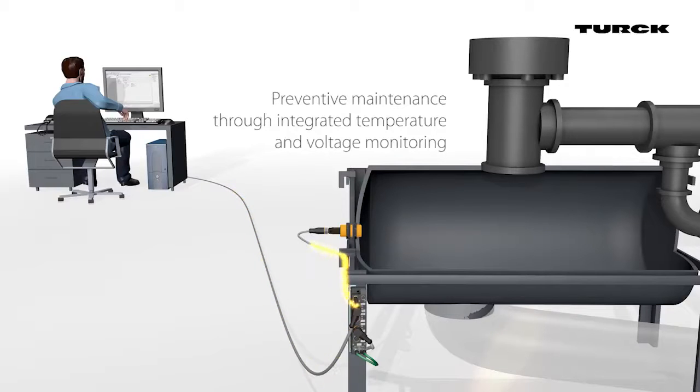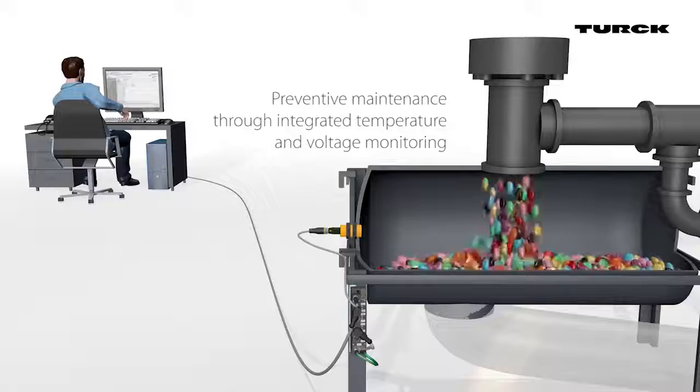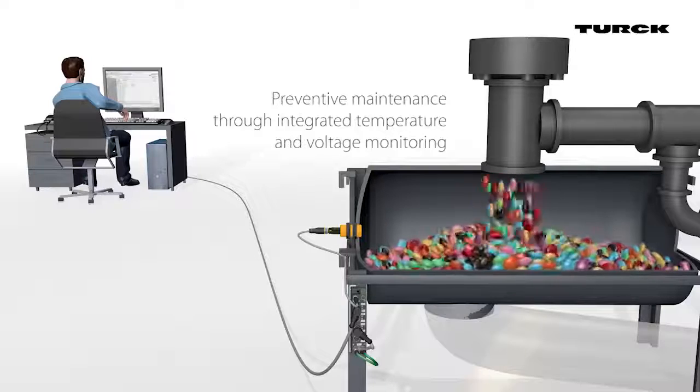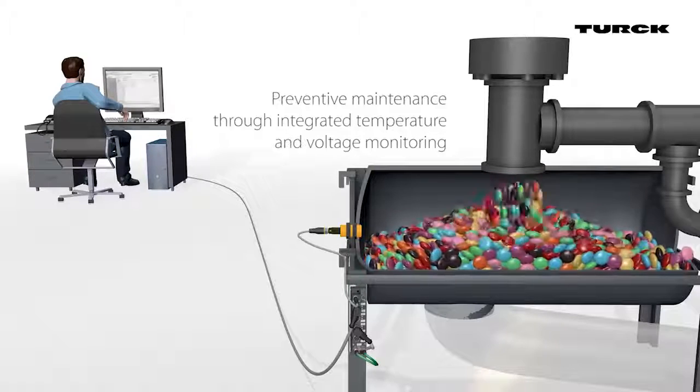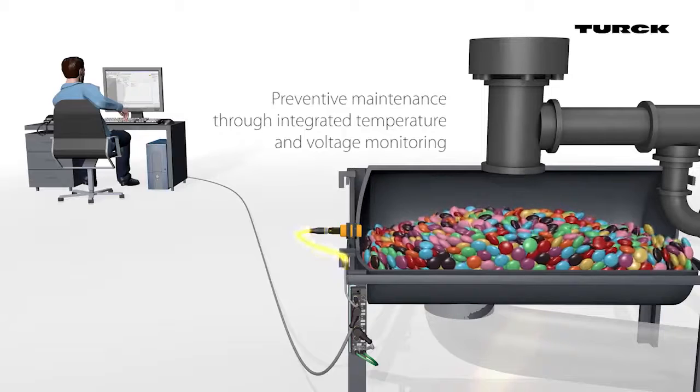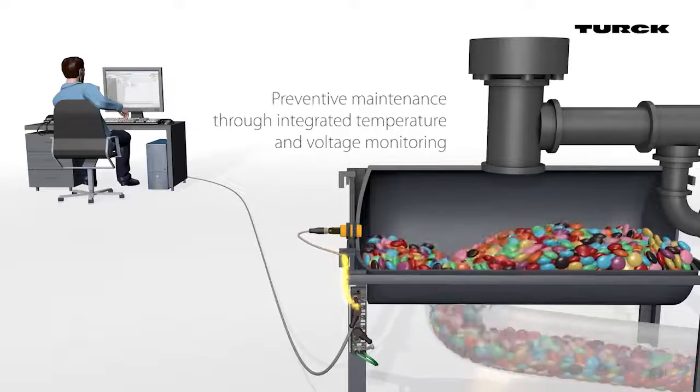The BCT with IO-Link enables the user to carry out predictive maintenance. The sensor reports via IO-Link if the temperature in the housing exceeds the critical value. Additionally, the state of the power supply is monitored and reported.